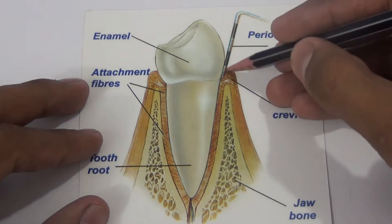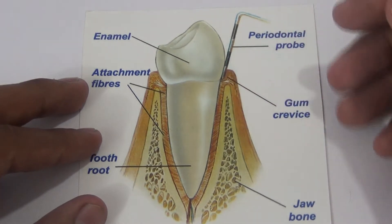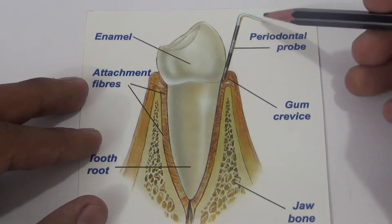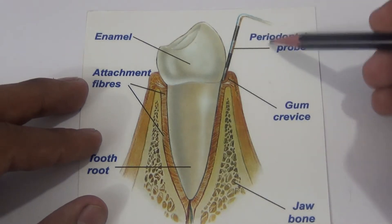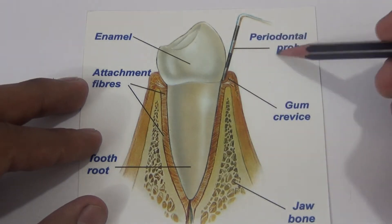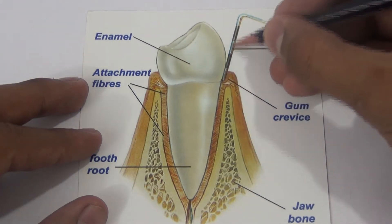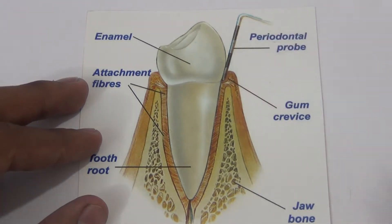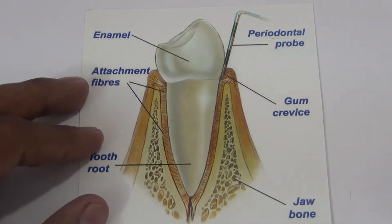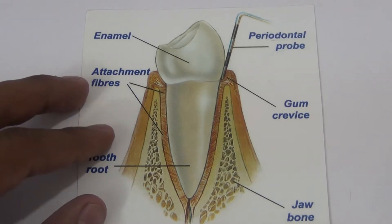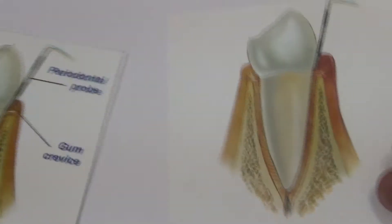In healthy gums the teeth are firmly attached to the gums and the crevice is not deeper than two to three mm. This gum crevice depth is a clear indicator of gum health and is usually tested using the periodontal probe. This is the instrument which has gradations to let us know how deep the gum crevice is and how healthy the gums are. So this is the normal gingiva and now let us go to the first stage of gum inflammation, that is the gingivitis.